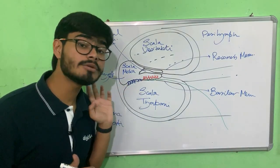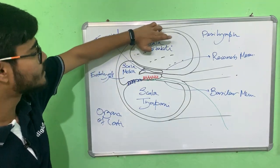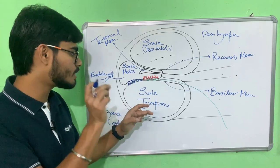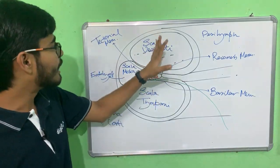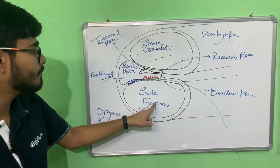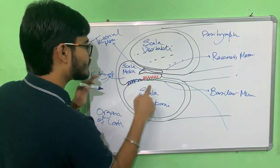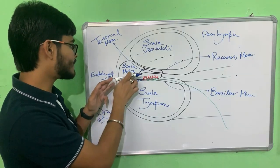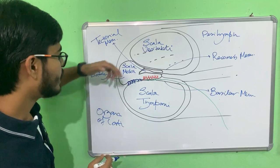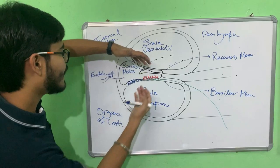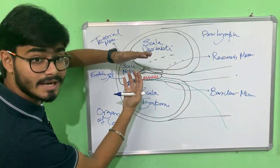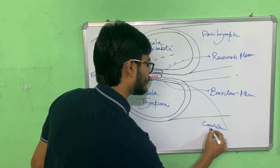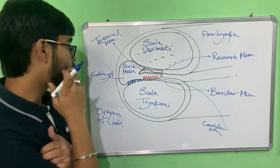Vibration from the ear ossicles hits the oval window, which transfers the vibration to the perilymph in the scala vestibuli. This perilymph vibration then comes to the scala tympani perilymph, which vibrates the basilar membrane on which the organ of Corti sits. This sets the endolymph in the scala media into vibration. The tectorial membrane then vibrates, touching the stereocilia and generating impulses, which are carried through the cochlear nerve to the brain.